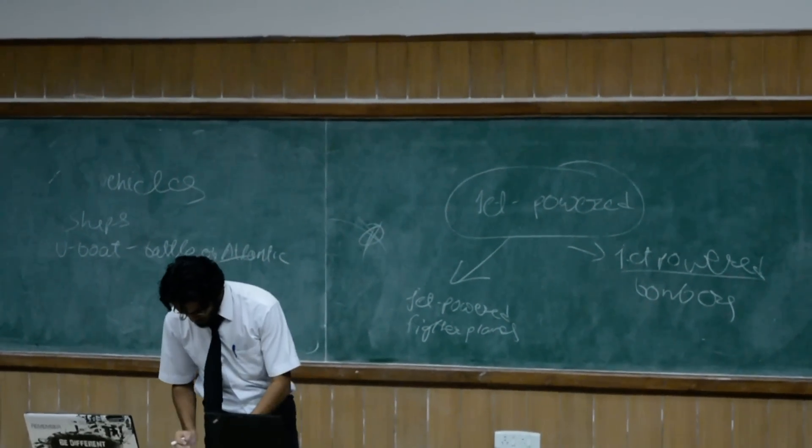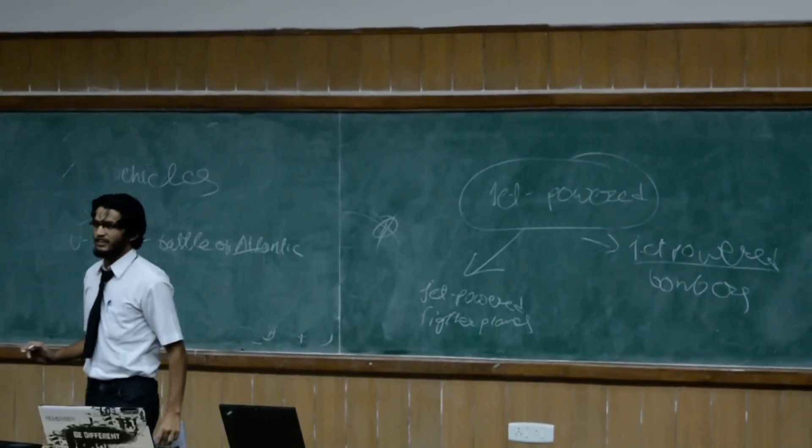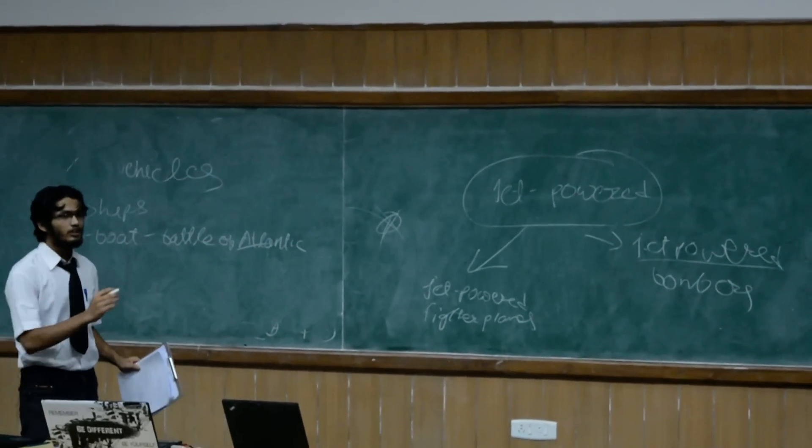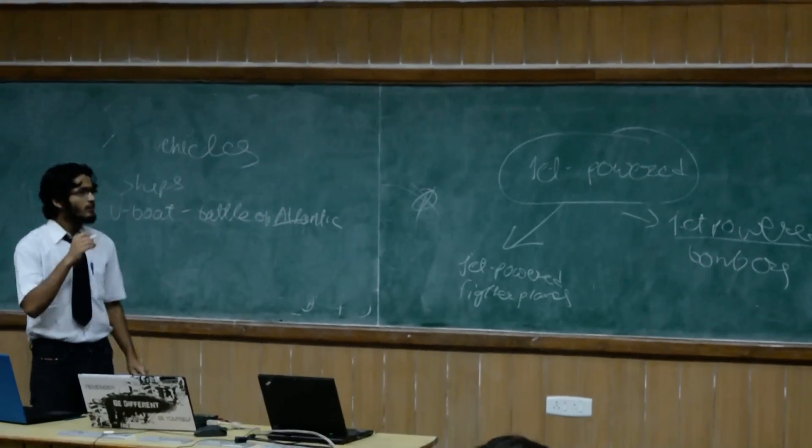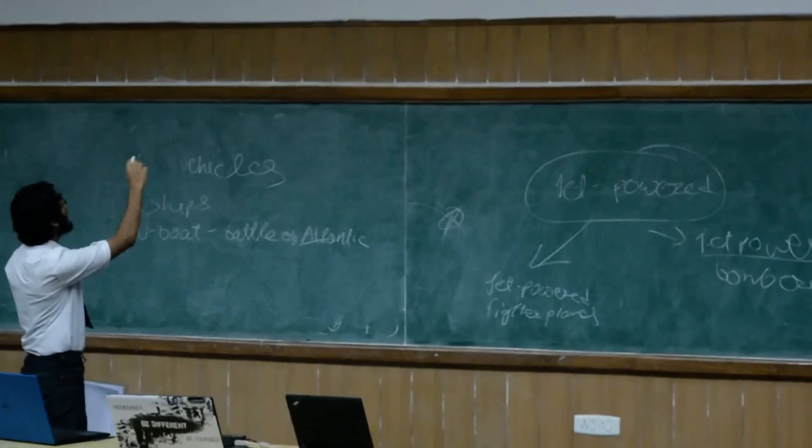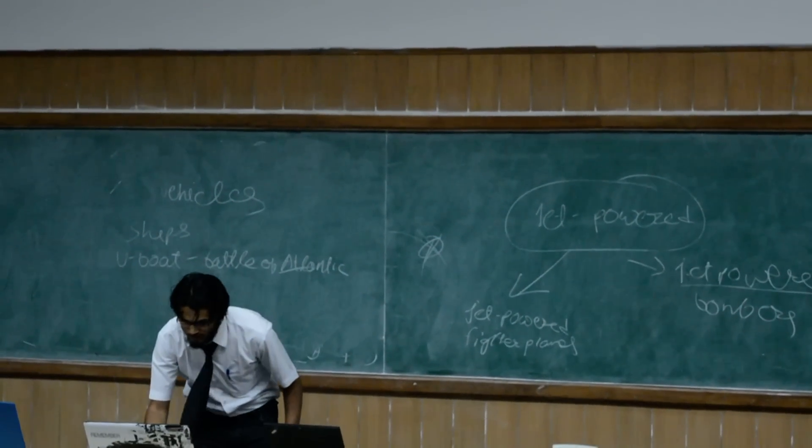And what you see below is Ar 234. Ar 234 was the jet powered bomber. Actually it was used for surveillance. Most of the parts, it was majorly used for the surveillance only. But it was a powerful bomber and it was never even shot down. Ar 234 was not even shot down.